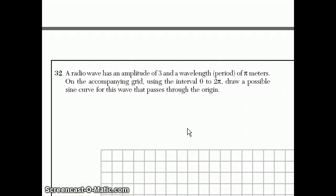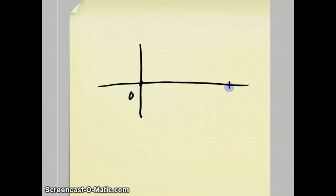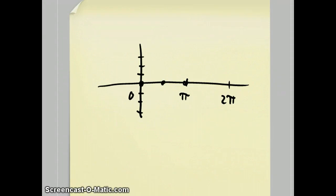For question number 32, they want you to create a sine curve that has an amplitude of three and a wavelength of pi. They want you to draw one, so you don't even need to create the equation. There are a lot of different answers to this question. But if zero is here and two pi — which is like 360 degrees — is there, and pi is in the middle, then an amplitude of three means it goes up three and down three from the center. Since the wavelength is pi, it needs to go through its whole cycle between zero and pi. The high point is halfway between the midpoint crossings, and the low point is halfway on the other side.